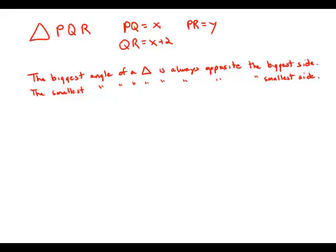In triangle PQR, if PQ equals x, QR equals x plus 2, and PR equals y, which of the three angles of the triangle has the greatest degree measure?